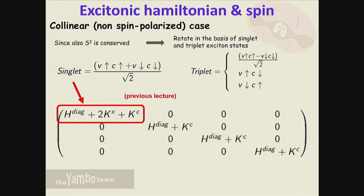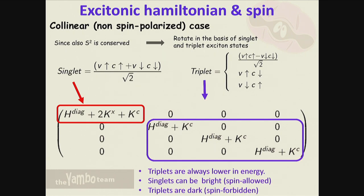These are exactly the equations seen before - the factor of 2 comes from describing singlet excitons. This other part is the triplet exciton, which is completely equivalent structurally. To calculate singlet excitons, this is the way - which is what we will do this afternoon. For triplet excitons, you turn off the exchange part. We learn from here that triplets are always lower in energy than singlets because this exchange term is negative - it's a positive quantity that you subtract. Singlets can be bright (spin-allowed), while triplets are dark (spin-forbidden).